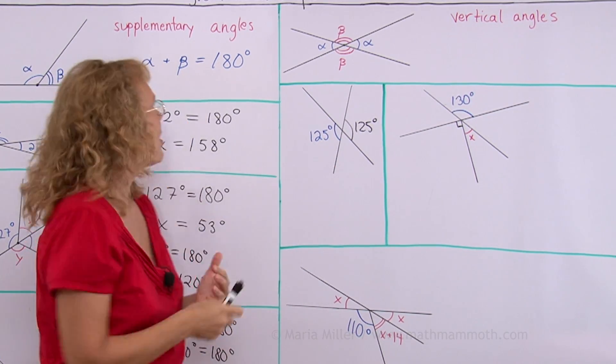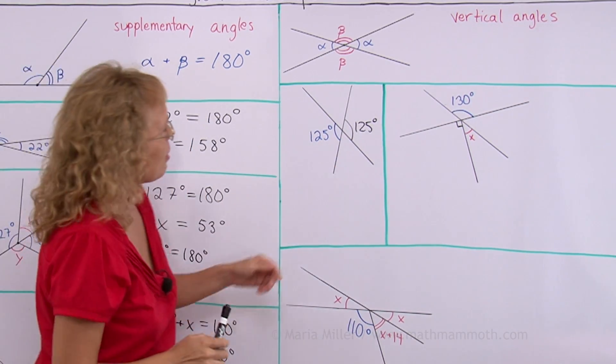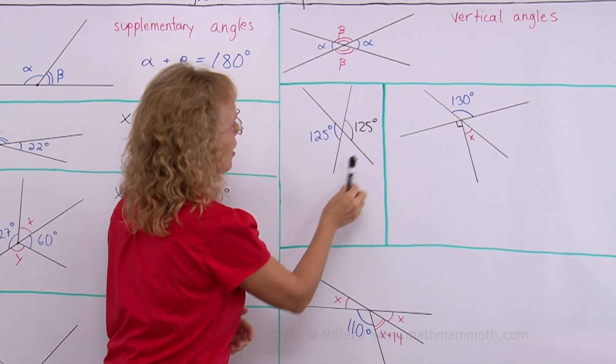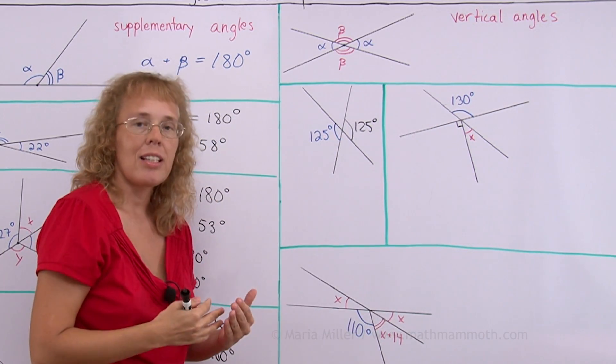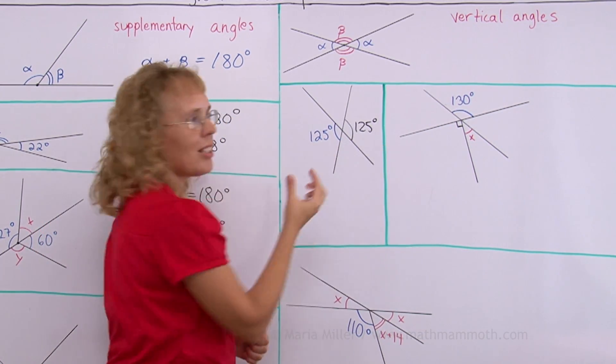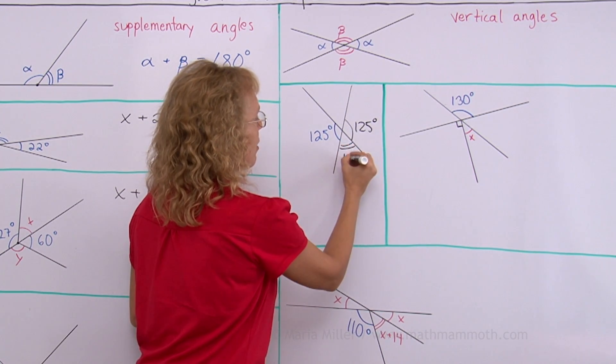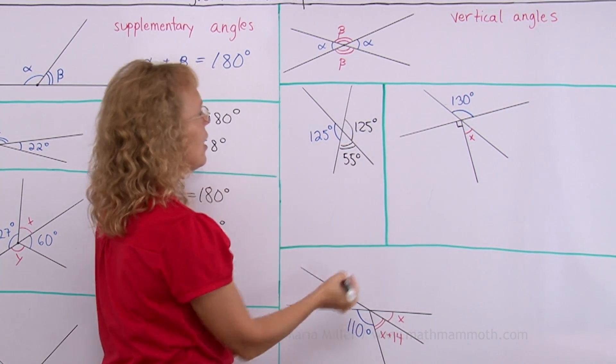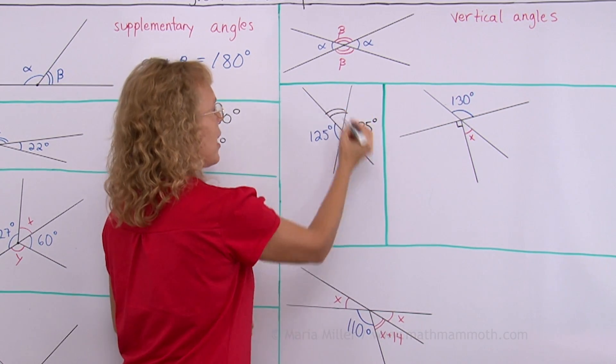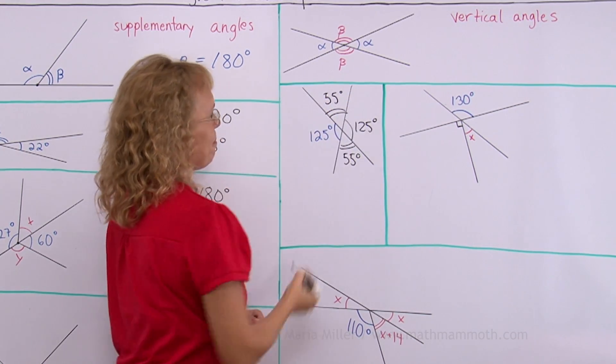First of all this here being a vertical angle is equal to 125 degrees. It is the same. Now you use this principle from here. Because there is a line here. So this and this together they are supplementary angles. So together they make 180 degrees. So this would be 55 degrees. And then this one here is the same because it is a vertical angle.